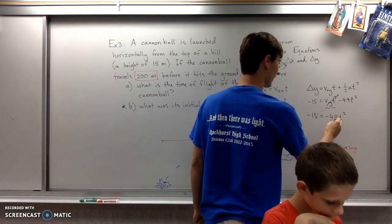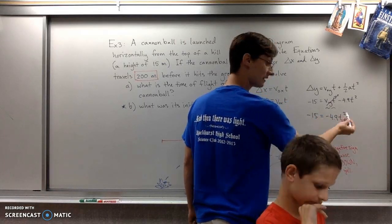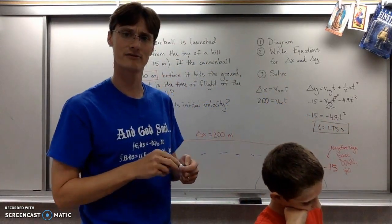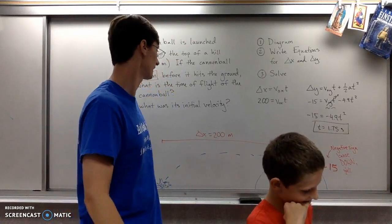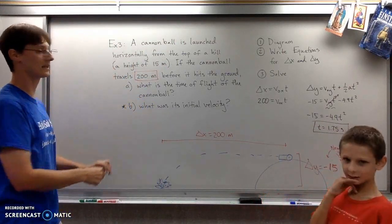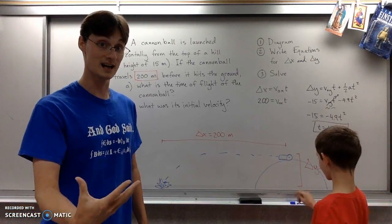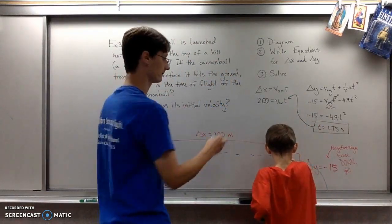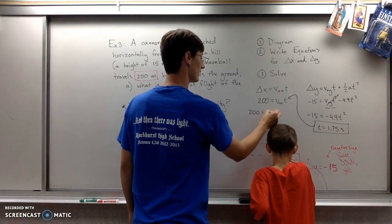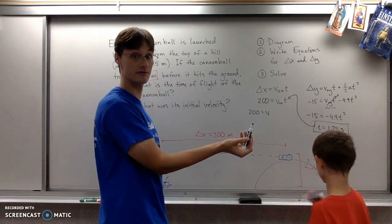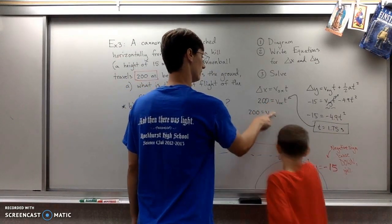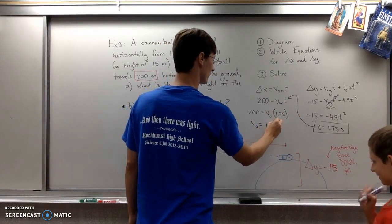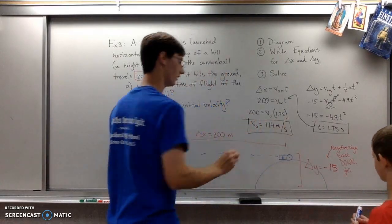Doing a bit of algebra, divide both sides by 4.9, take the square root, and the time is 1.75 seconds. Now for part b: what was the initial velocity? We know the time, so 200 equals v-naught x t. That means v-naught is approximately 114 meters per second.